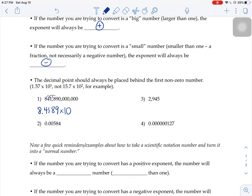So I would have to move it 1, 2, 3, 4, 5, 6, 7, 8, 9, 10, 11 times. And because I have to move it 11 times, and this is a big number, I'm going to make it a positive 11.